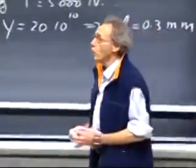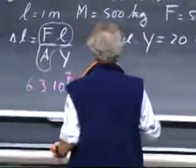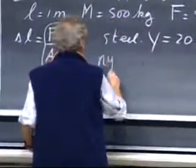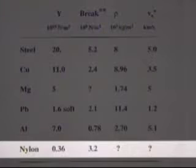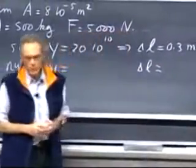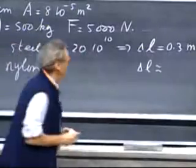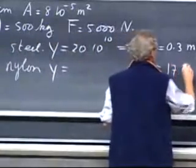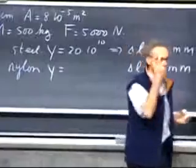However, if you make the rod, which would be really a rope, if you make it out of nylon, which has a Young's modulus about 55 times lower, the delta L will then be 55 times larger. So instead of a third of a millimeter, I will get something like 17 millimeters.